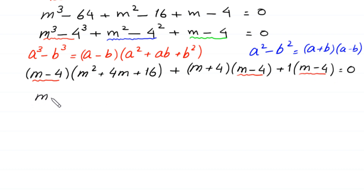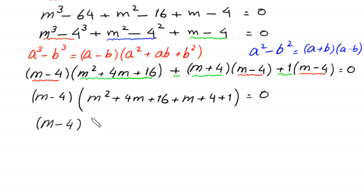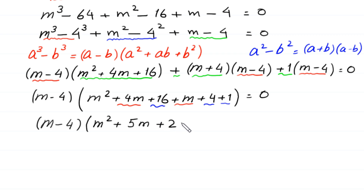We factor out m minus 4, and inside the bracket we have m squared plus 4m plus 16, plus m plus 4, plus 1. Combining like terms inside the bracket: m squared, 4m plus m gives 5m, and 16 plus 4 plus 1 gives 21. So the factored equation is m minus 4 times m squared plus 5m plus 21 equals 0.